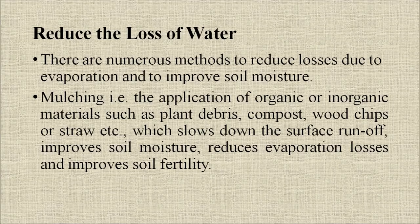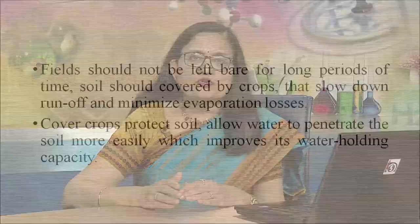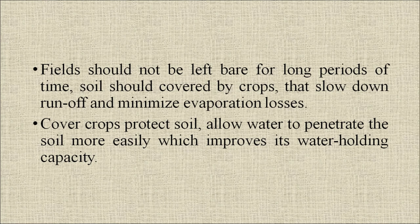Reduce the loss of water: there are numerous methods to reduce losses due to evaporation and to improve soil moisture. Mulching, that is the application of organic or inorganic materials such as plant debris, compost, wood chips or straw, slows down surface runoff, improves soil moisture, reduces evaporation losses and improves soil fertility. Fields should not be left bare for long periods of time; soil should be covered by crops that slow down runoff and minimize evaporation losses. Cover crops protect soil and allow water to penetrate the soil more easily, which improves its water-holding capacity.